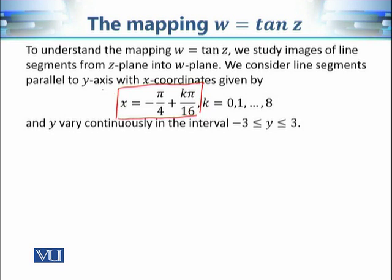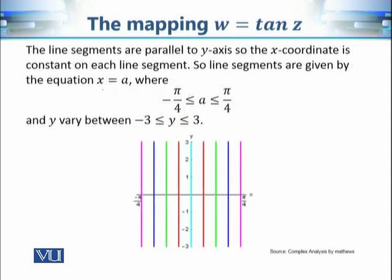The x-coordinate is defined as −π/4 + kπ/16, where k varies from 0 to 8. When k equals 8, we get π/4. So basically the line segments vary from x = −π/4 to x = π/4. As in the case of sine and cosine, y varies from −3 to 3.